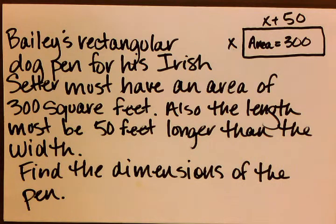Bailey's rectangular dog pen for his Irish Setter must have an area of 300 square feet. Also, the length must be 50 feet longer than the width. They want us to find the dimensions of the pen.